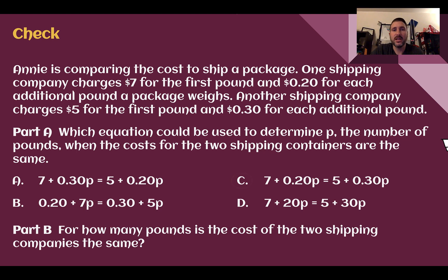Check your answer. C is our correct equation. So it's $7 for the first pound and 20 cents for each additional pound. The other shipping five for the first pound and then 30 cents for each additional pound. We can represent that. Here's our originals and we're adding that value to it.